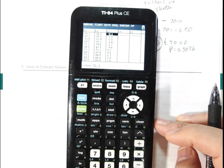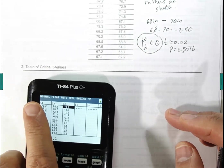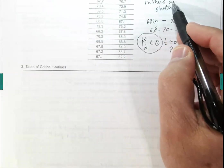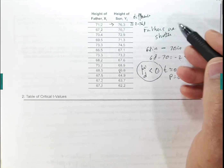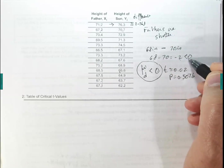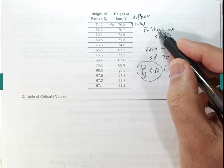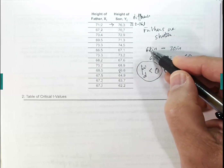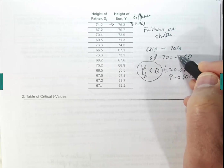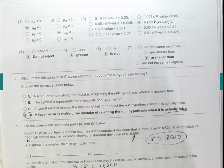We need to test whether the difference is greater than or less than zero. The claim is sons are taller than their fathers, meaning fathers are shorter. Make up a height for a father — say 68 inches. The claim says sons are taller, so give the son 70. The difference is negative, so your claim is mu_d less than zero. If instead fathers were taller, you'd get a positive difference and test mu_d greater than zero. In our case, we test mu_d less than zero.